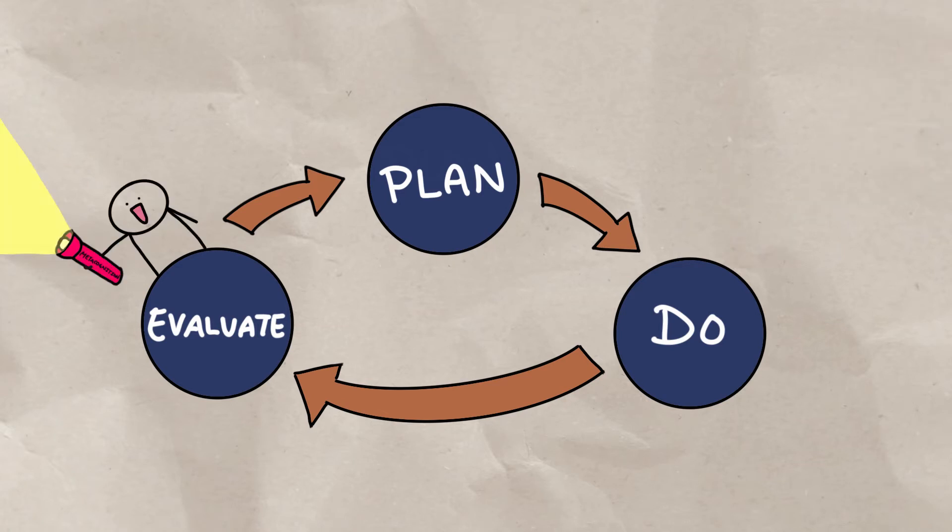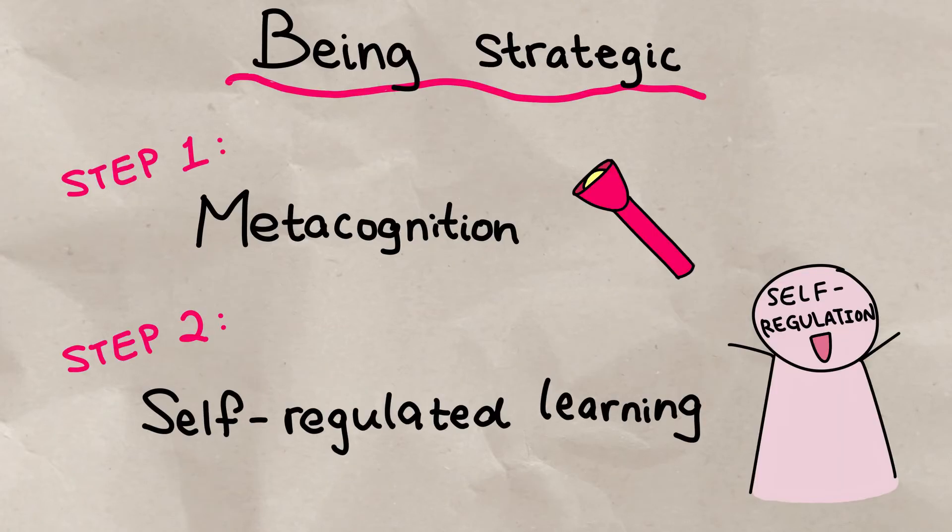This helps us revise the plan and repeat the process. Researchers call this cycle self-regulated learning, which strategic effective learners intentionally practice.